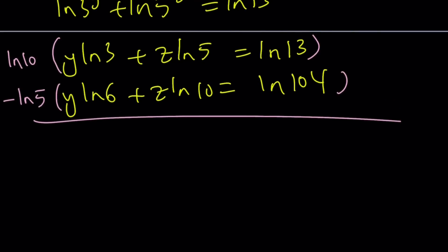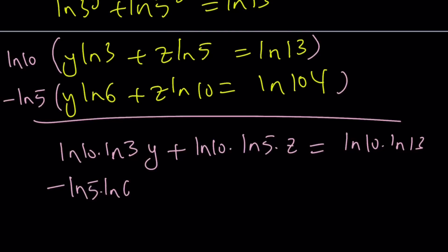ln 10 times ln 3 times y plus ln 10 times ln 5 times z equals ln 10 times ln 13, and then from here, negative ln 5 times ln 6 times y minus ln 5 times ln 10 times z equals negative ln 5 times ln 104. Great.